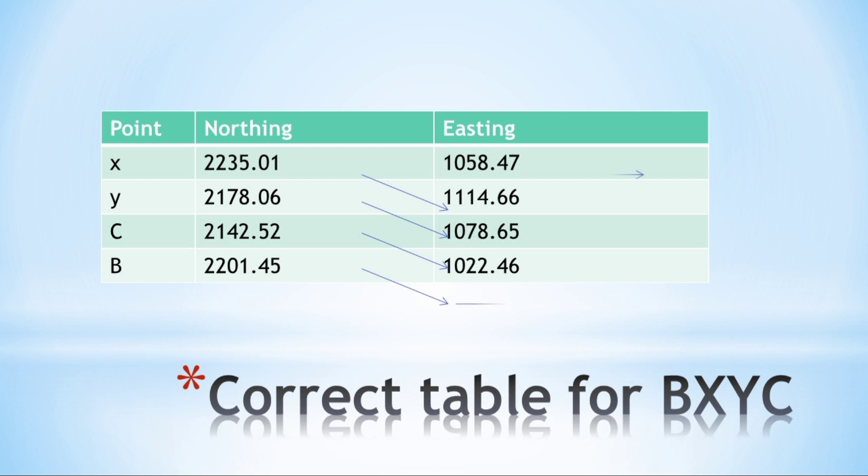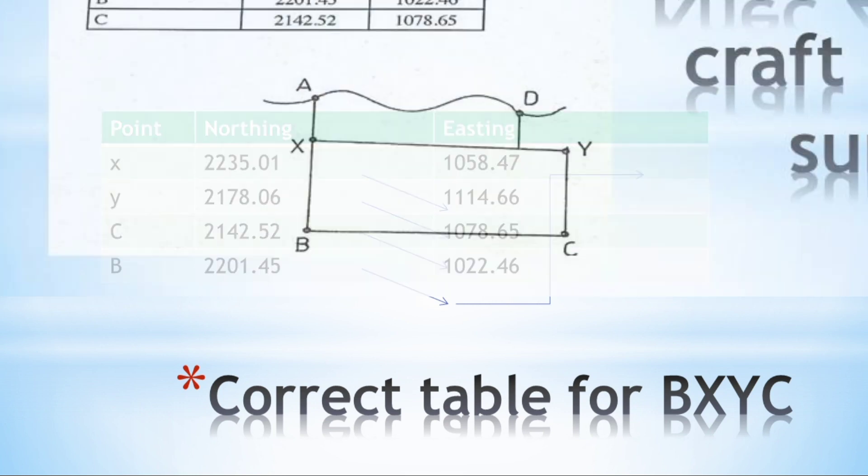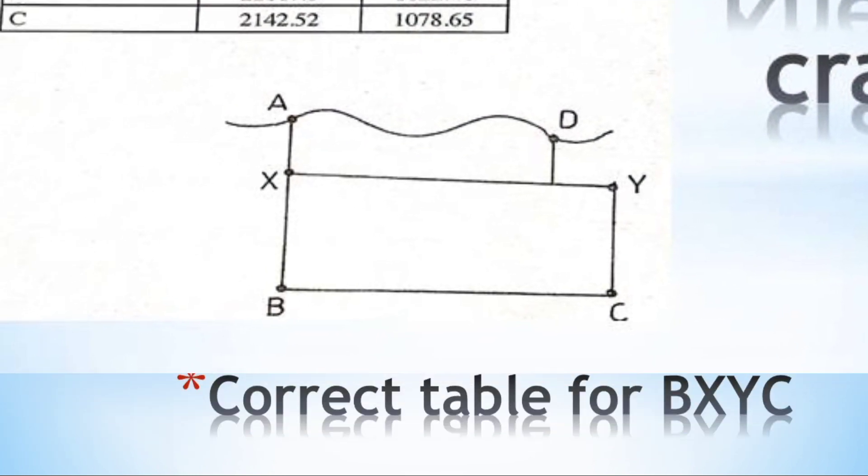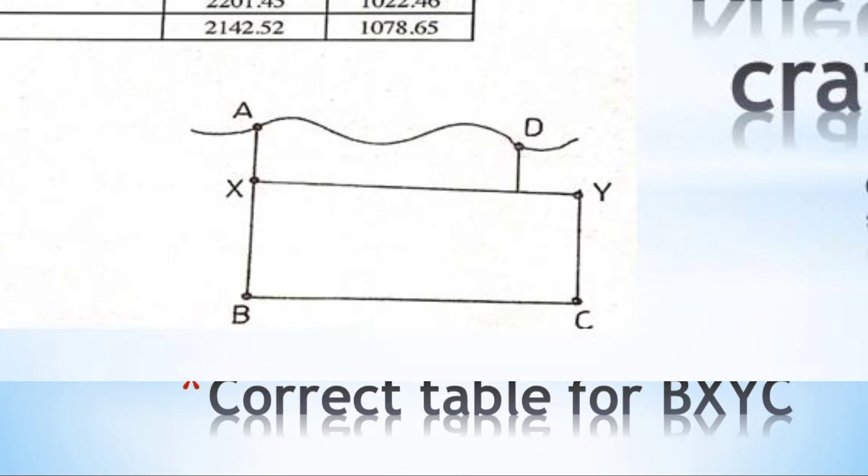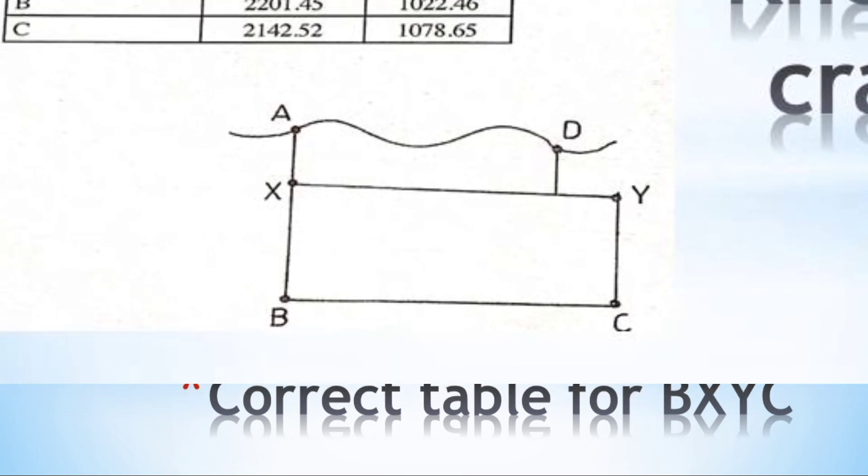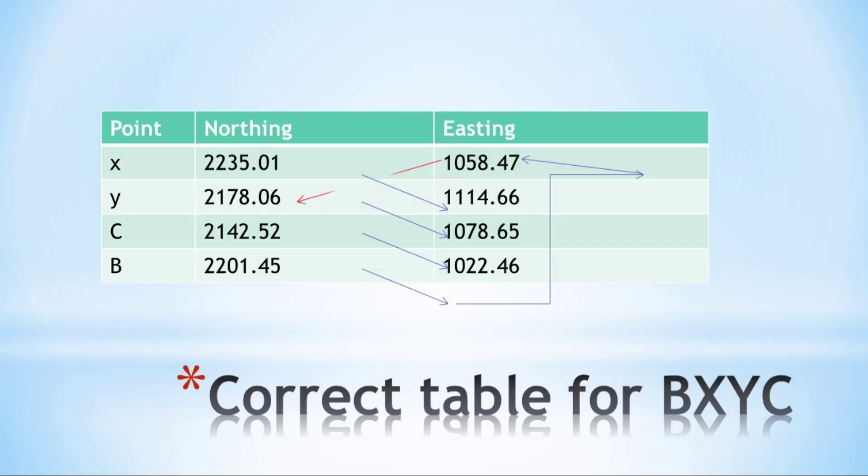According to the diagram that we have been given, our table was not arranged well. In our diagram, we are moving from point X, Y, C to B, so the first thing you need to do is correct that table.